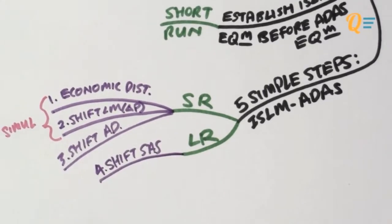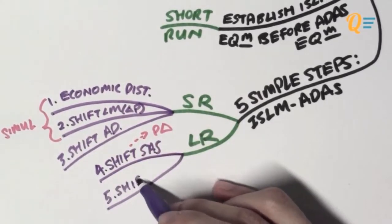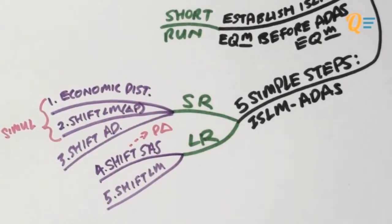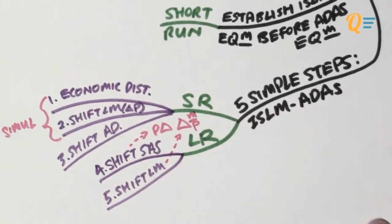Now, for the long run, the fourth step will be to shift your SAS curve. And this is going to result in a change in price, right? And that brings me to the last step, which is to shift the LM curve so that you cater for this change in price, which changes the real money supply in the economy. So these are the five simple steps that you have to use when you talk about the dynamics of the ISLM ADES model. I would suggest that you pause the video right now and copy down these five steps on a piece of paper before we move on to the graphical explanations.